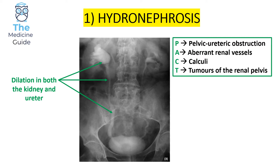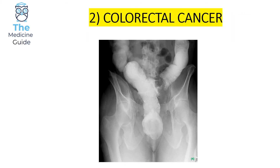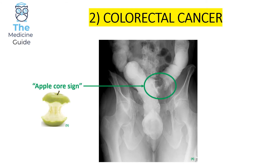Let's have a look at the second x-ray. This is an example of colorectal cancer. The key classic finding on an abdominal x-ray of colorectal cancer is known as the apple core sign. If you look at the picture of the apple core in the corner of the screen and then compare it to the abdominal x-ray, hopefully you can see the similarity, which will help you remember future cases.